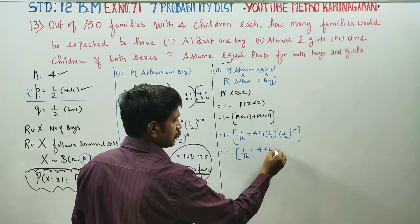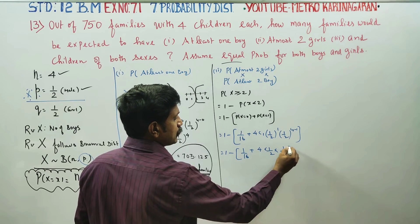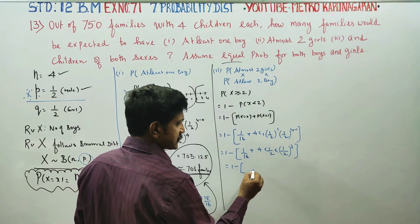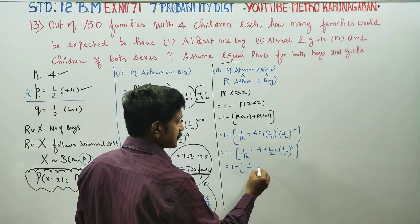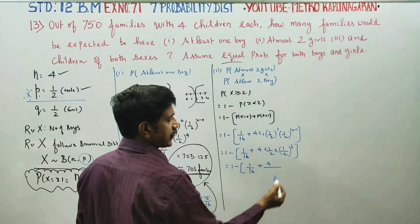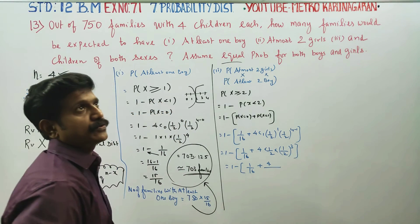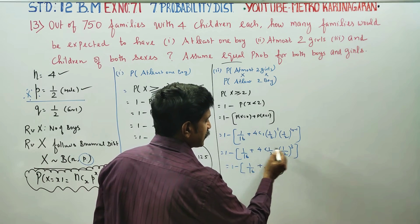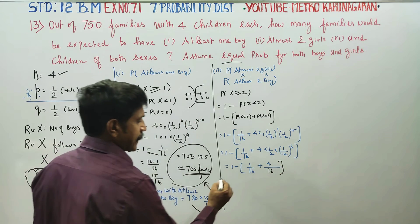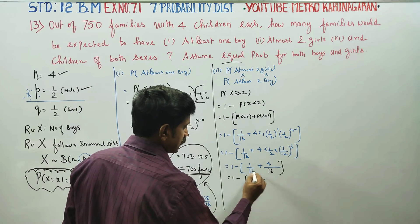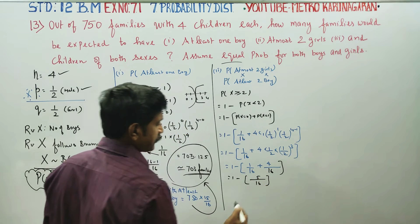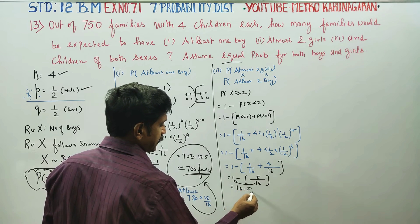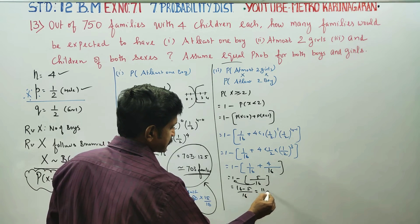Continuing: (1/2)^3 = 1/8, and 4 divided by 16 simplifies. Taking LCM of 16: 1 + 4 = 5, so P(X ≤ 1) = 5/16. Therefore 1 minus 5/16 = 16 minus 5 by 16. The answer is 11/16.